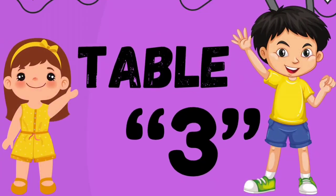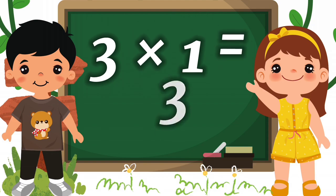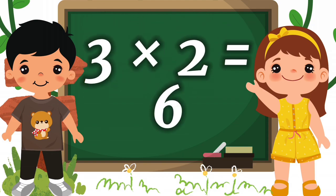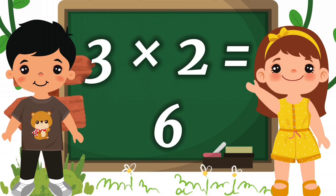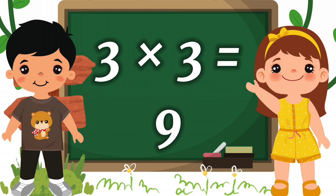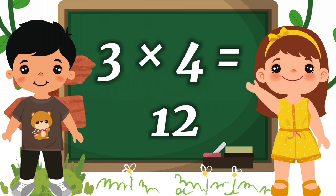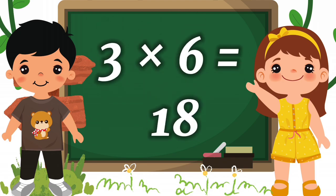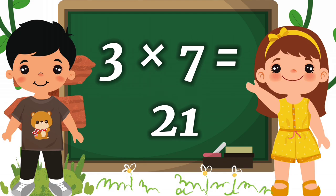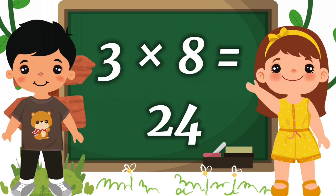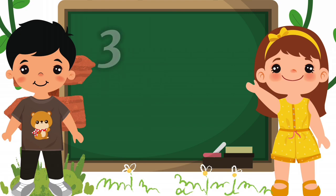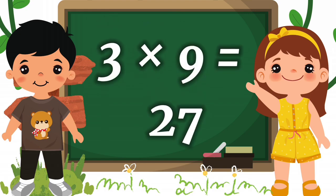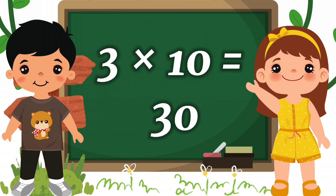Learn the table of three. Three nine equals twenty-seven. Three ten equals thirty.